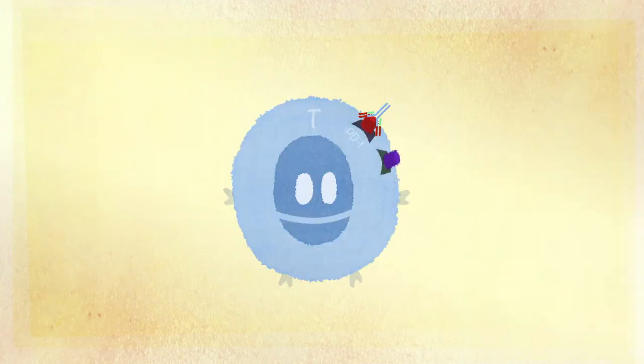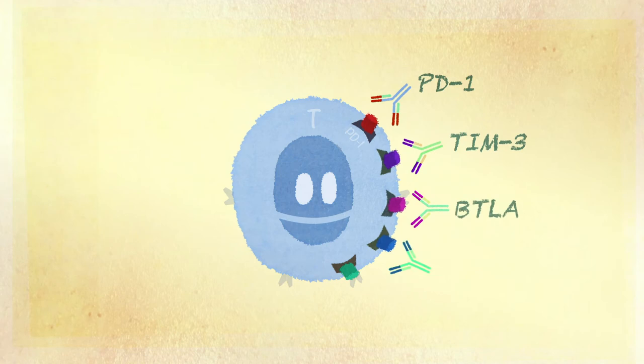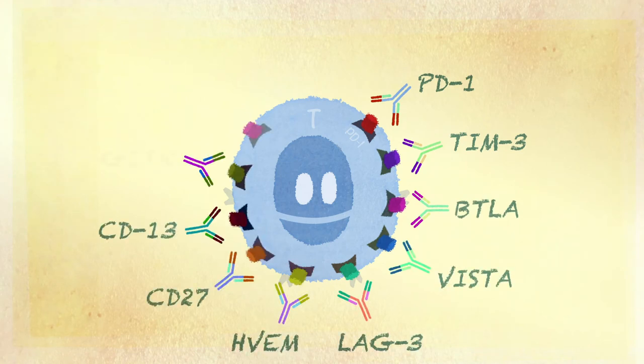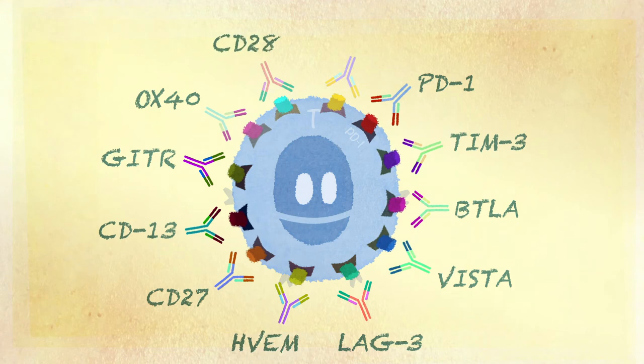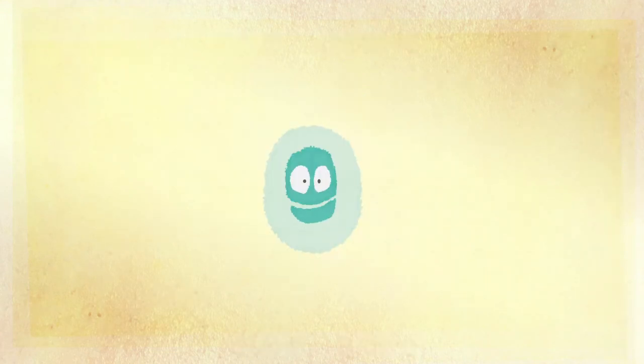Doctors understand that the inhibition of the immune system must be prevented so that it can fight against the tumour. Researchers have identified various antibodies that can be used to either activate or block different programs to stimulate our cells. We must now find out how to use them effectively.